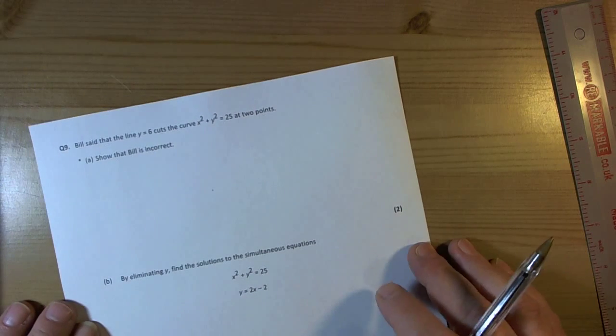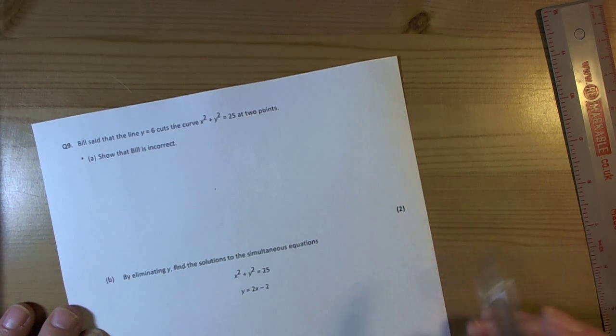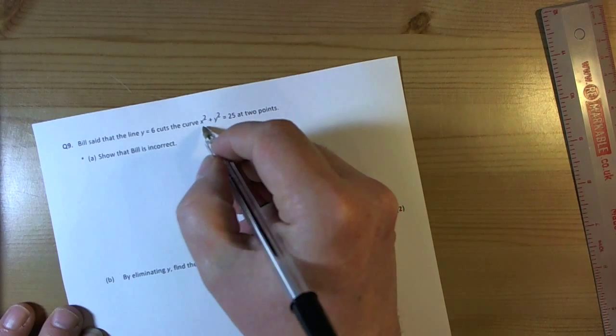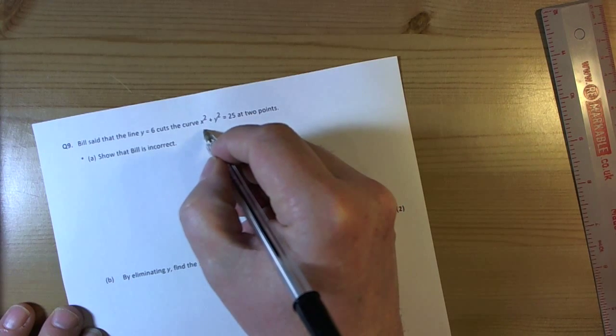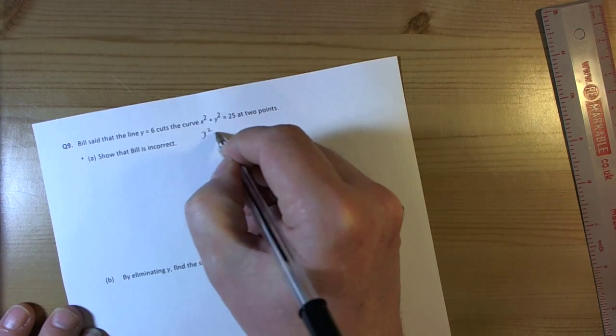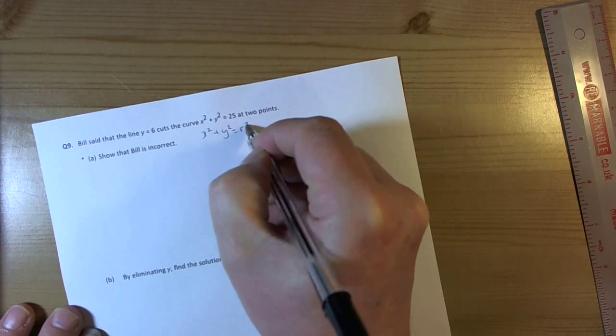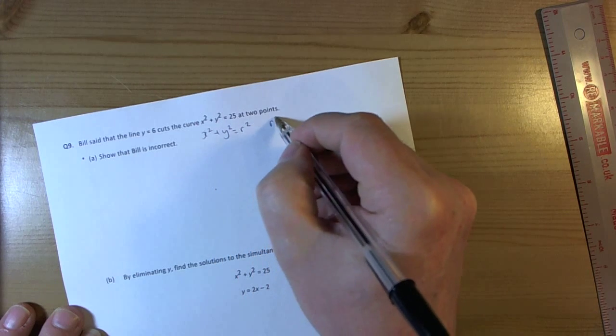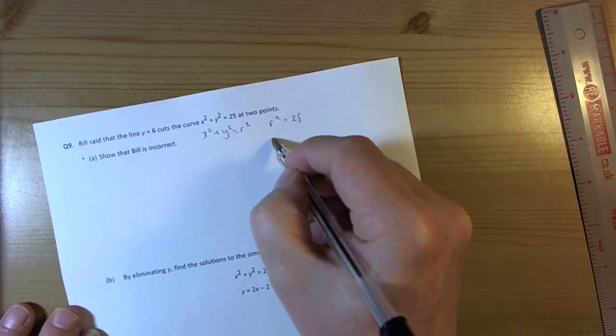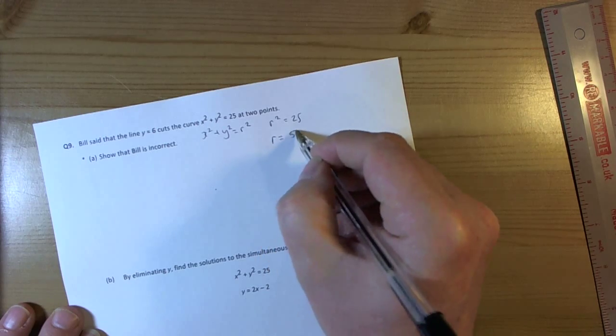This is another example of solving equations involving the equation of the circle. So here we've got a circle equation because this is in the general format of x squared plus y squared equals r squared. So in this case r squared is 25, so the radius of the circle is 5.